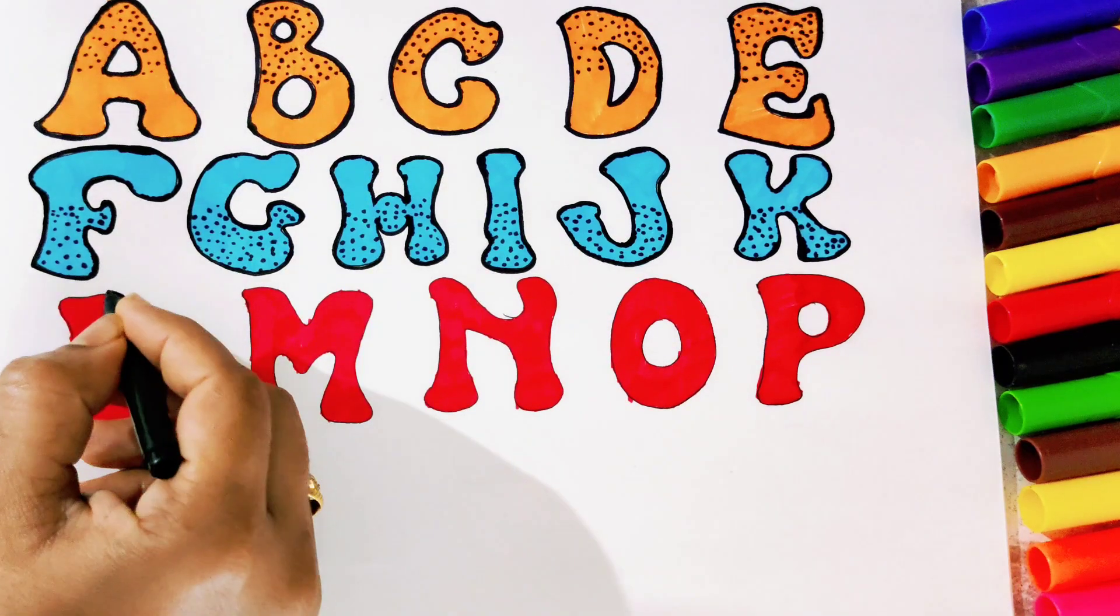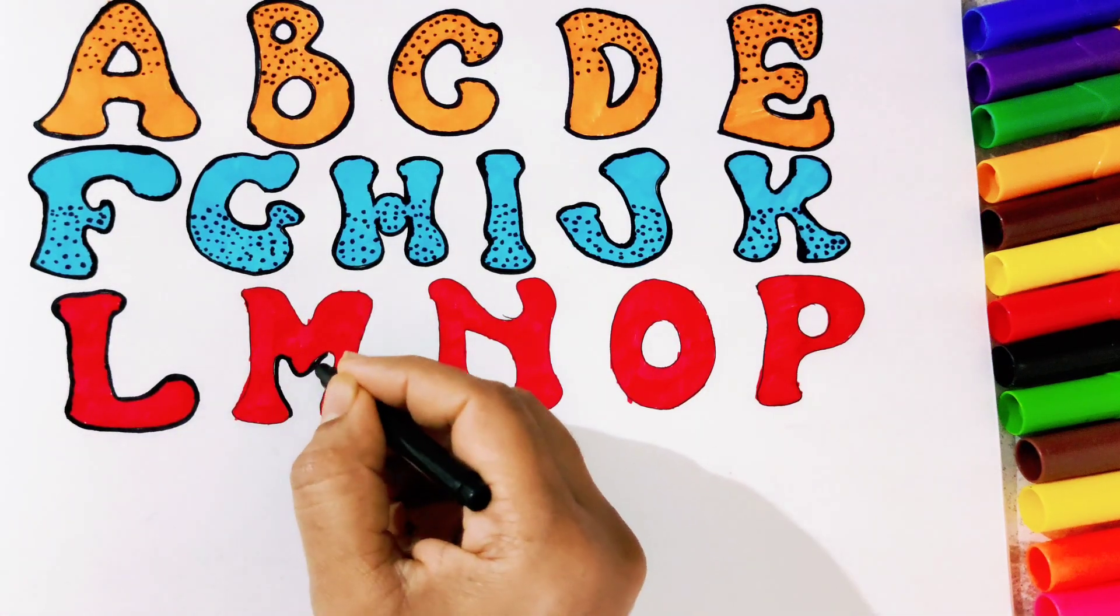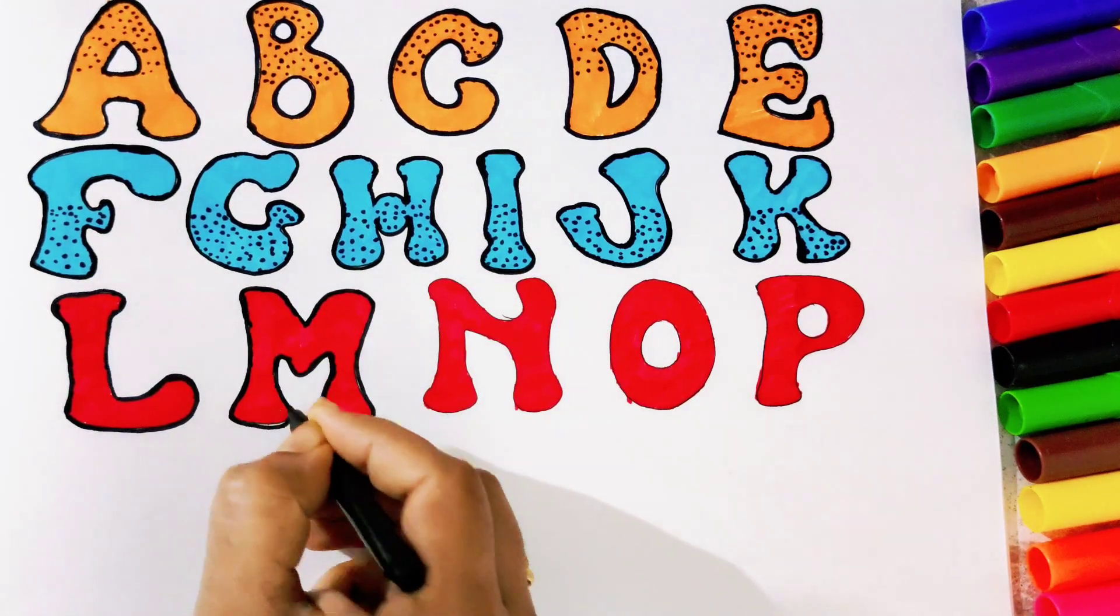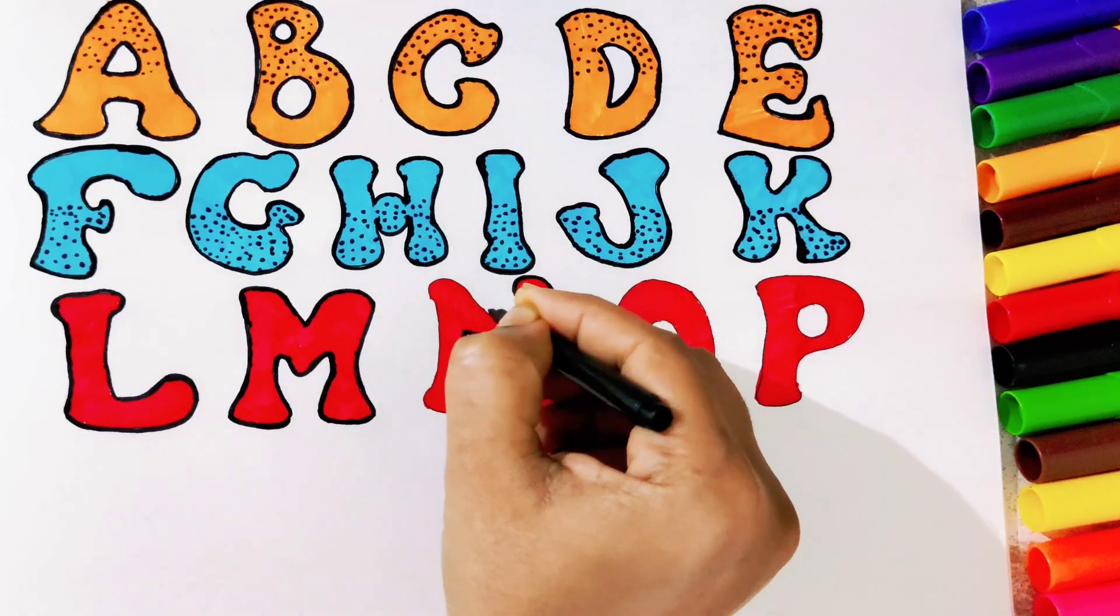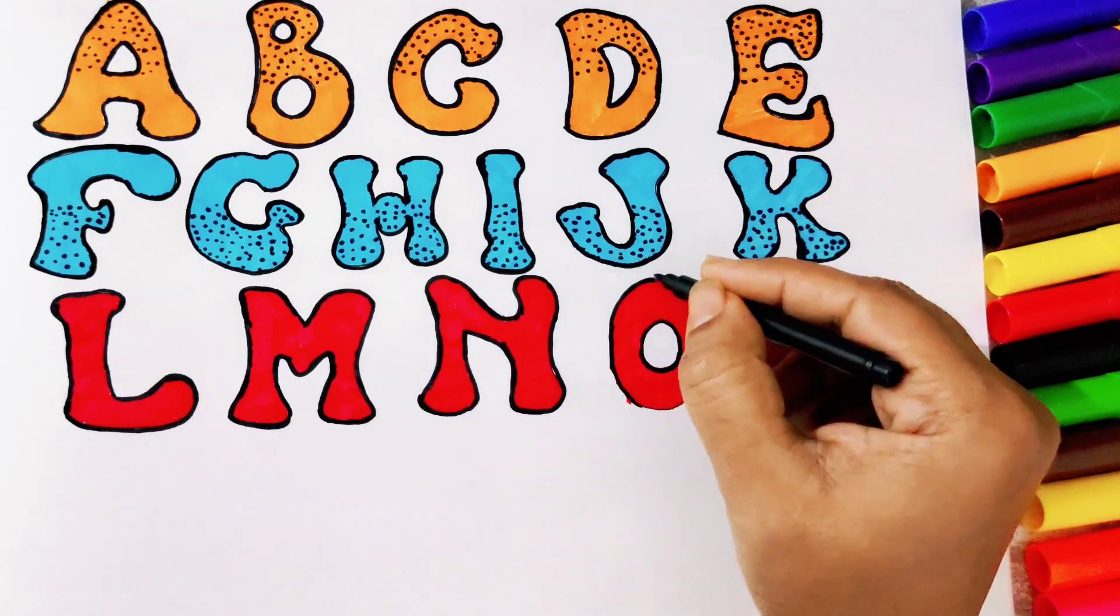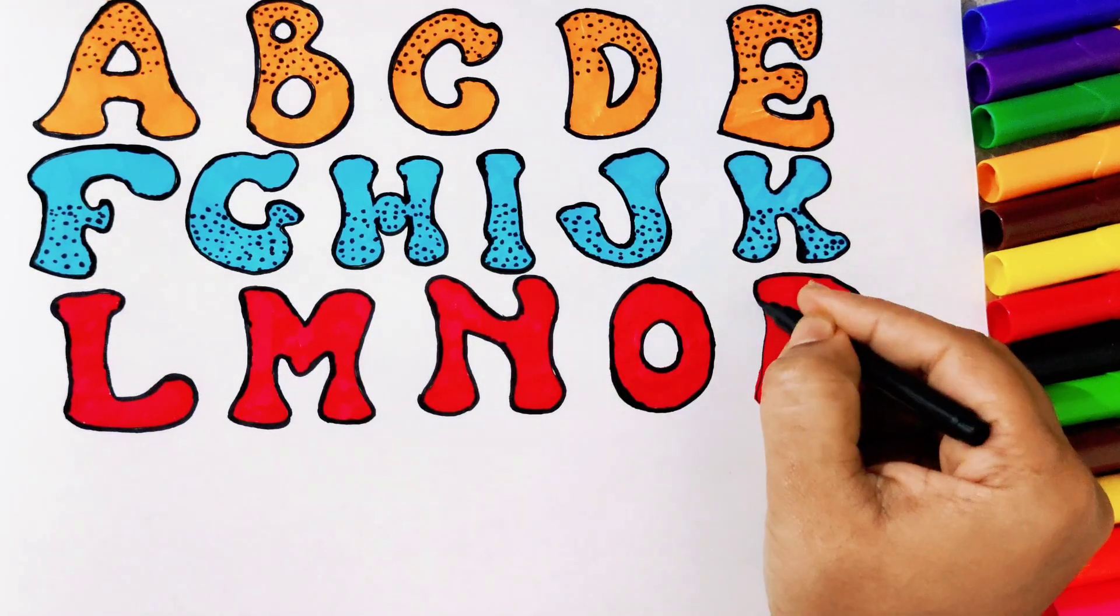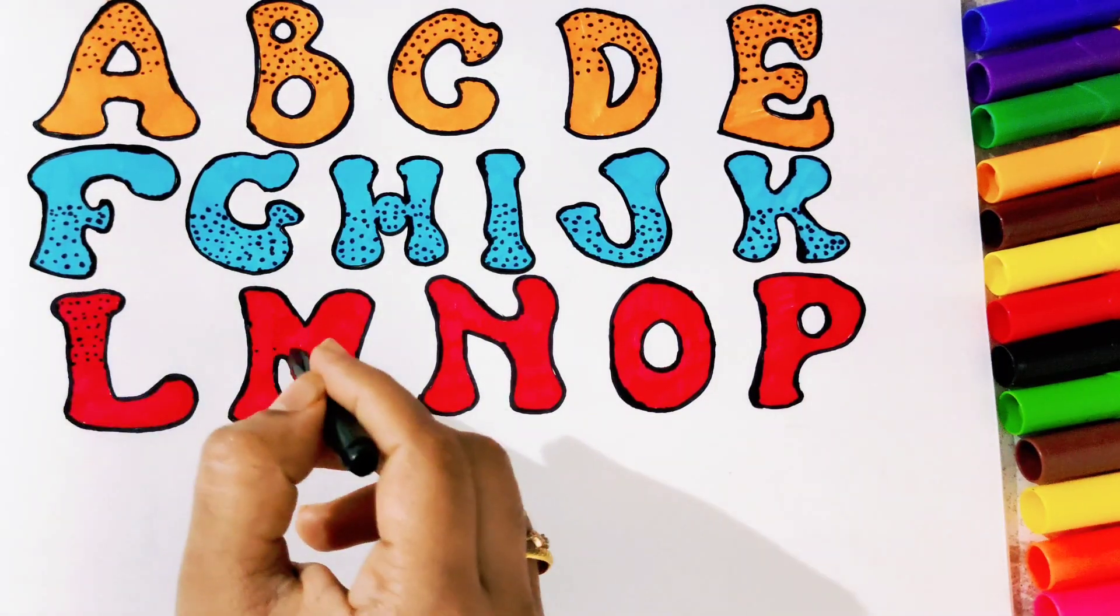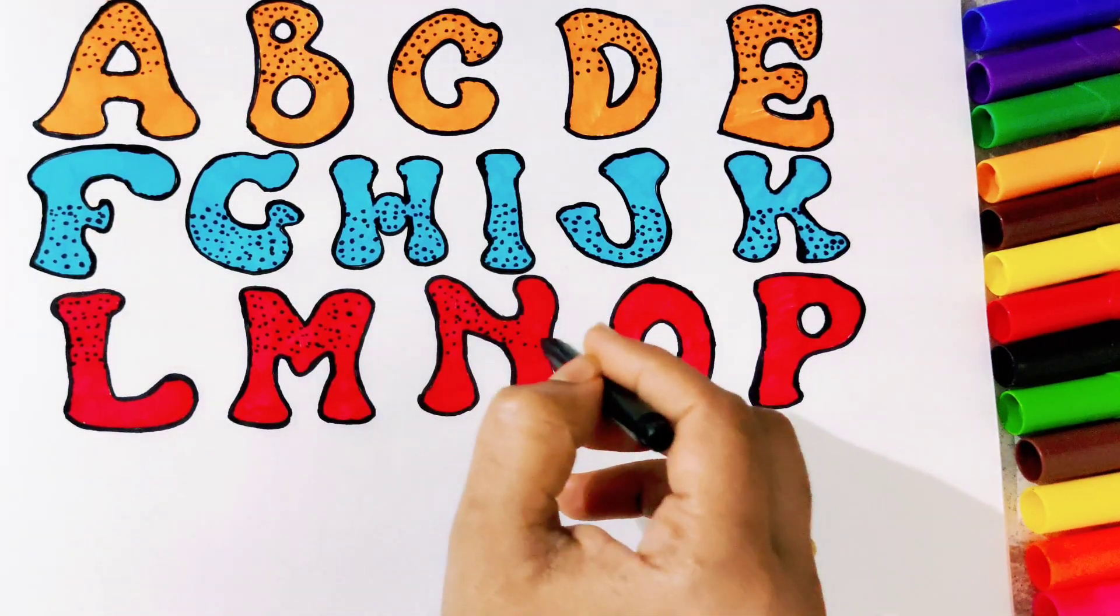Now we will draw the border for the alphabets. We will also create the same pattern on these five letters L, M, N, O, P.